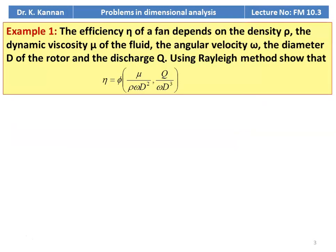Example number 1: The efficiency eta of a fan depends on the density rho, the dynamic viscosity mu of the fluid, the angular velocity omega, the diameter D of the rotor, and the discharge Q. Using the Rayleigh method, show that eta equals a function of mu divided by rho omega D squared, and Q divided by omega D cubed.